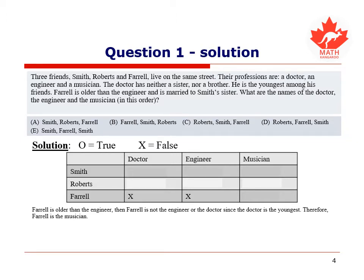So Farrell must be the musician, and since he is the musician, Smith and Roberts are not the musician, so you can put X's on that column. Next, we know that Farrell is married to Smith's sister, and since the doctor doesn't have any brothers or sisters, Smith cannot be the doctor.